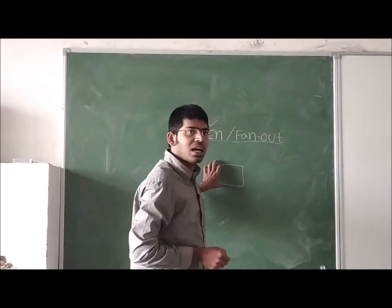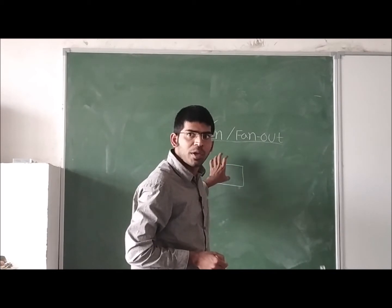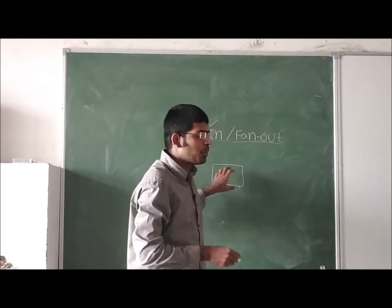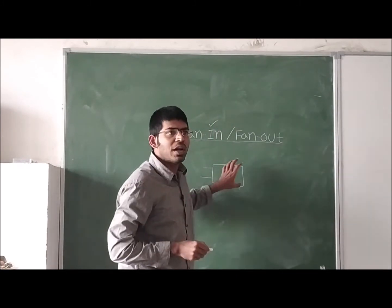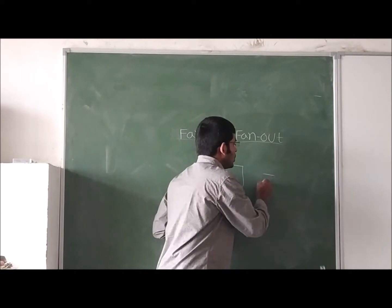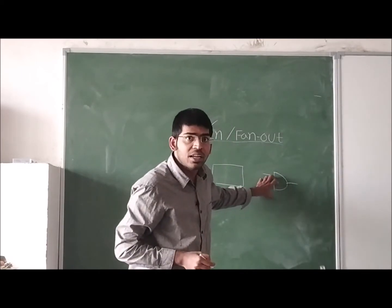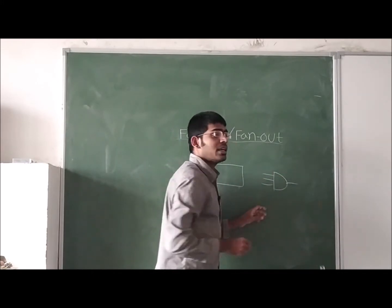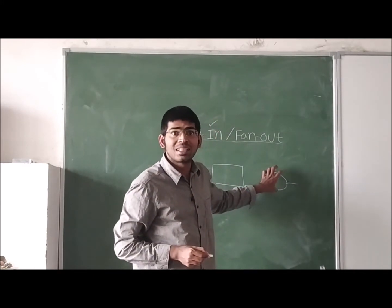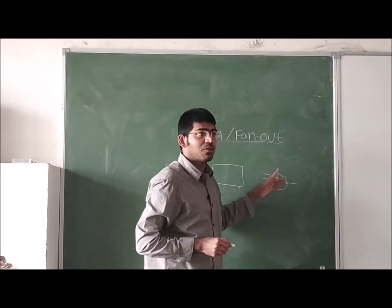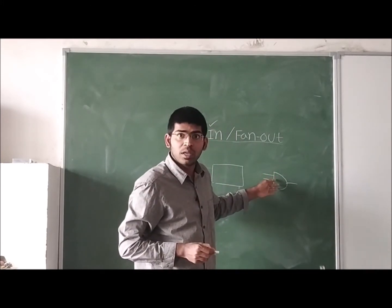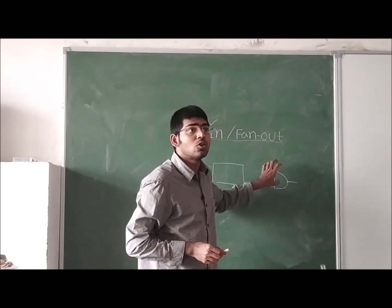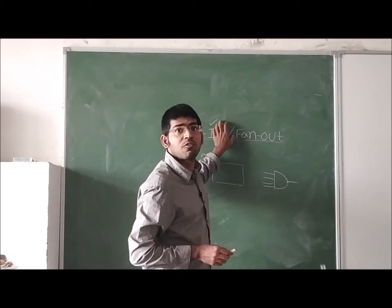For example, if this is a two-input AND gate, then the fan in of this AND gate is two. If this is a three-input AND gate, then the fan in is three. If this is a four-input AND gate, then the fan in is four. Simply, the number of inputs we can connect to this AND gate is described using fan in.